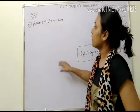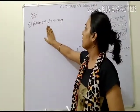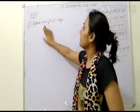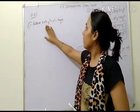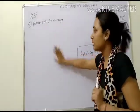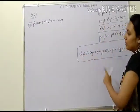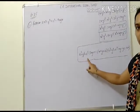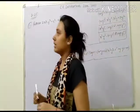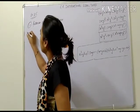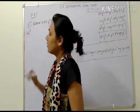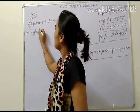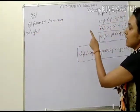Now question 11 says: factorize 27x cubed plus y cubed plus z cubed minus 9xyz. We can see 3 cube terms and 4 terms total, so we apply the x cubed plus y cubed plus z cubed minus 3xyz formula. First, write the terms in whole cube form. 27x cubed can be written as 3x whole cube.